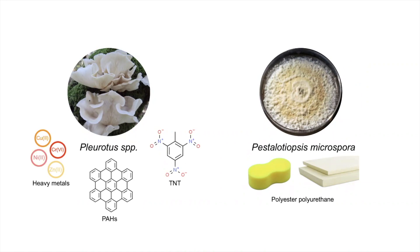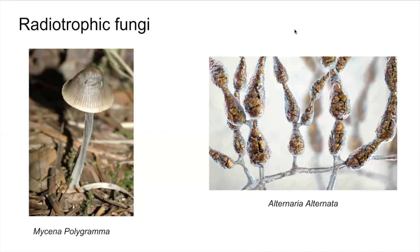Mycoremediation has also been used in environments polluted by radioactive waste. Saprotrophic micro-fungi found in soil were able to decompose radioactive debris from the Chernobyl reactor and have been shown to destroy radioactive hot particles within 50 to 150 days. Alternaria alternata, pictured on the right, as well as certain varieties of Aspergillus, Penicillium, and Rhizopus, have also been shown to ionize radioactive particles like cesium. Macro-fungi, especially basidiomycetes like Mycena polygramma on the left, also accumulate large amounts of radionuclides.